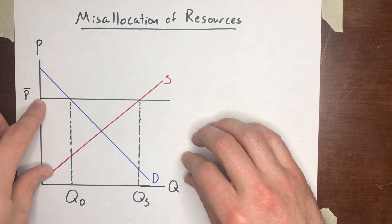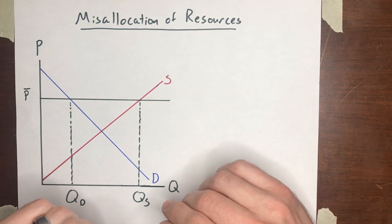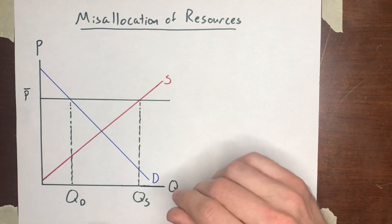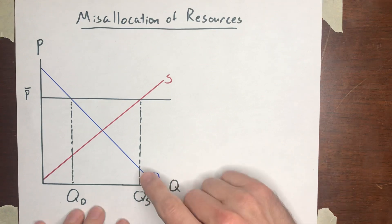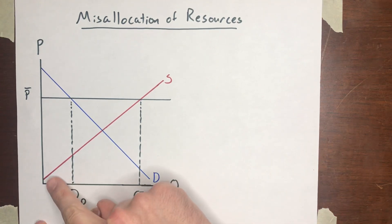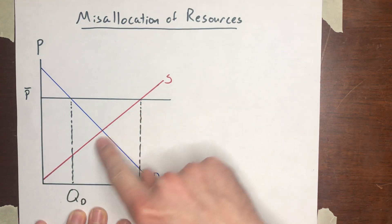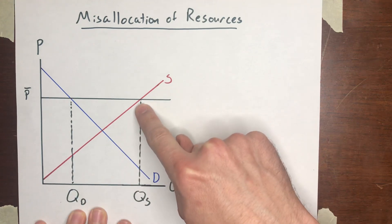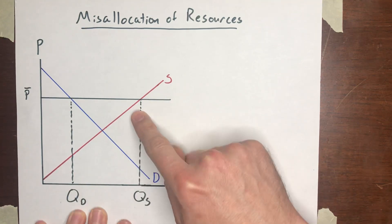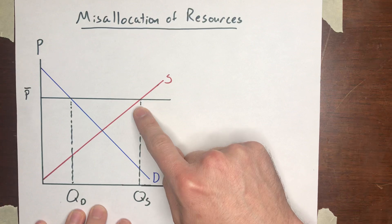But let's imagine a situation where that kind of competition doesn't happen and it doesn't eat up those resources, those gains from trade. Instead, what you might have is a situation where sellers randomly end up getting to sell or not, and this is the mirror image of what was happening with a price ceiling.